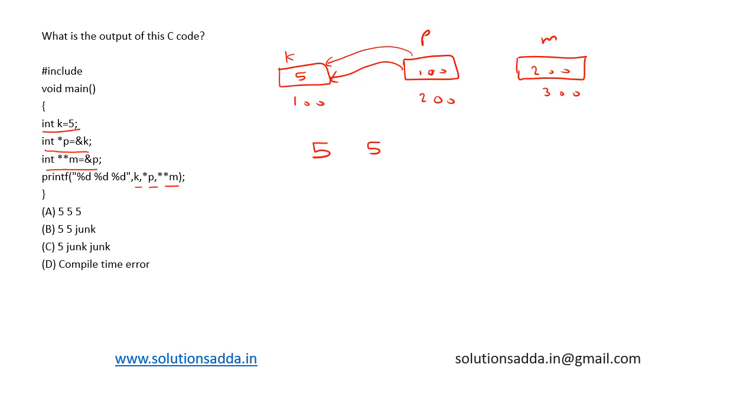Now star star m means, first star m means 200 here, it will point to here. This is star m. Now here this is having the value 100. Star star m would point to here. That is 5.